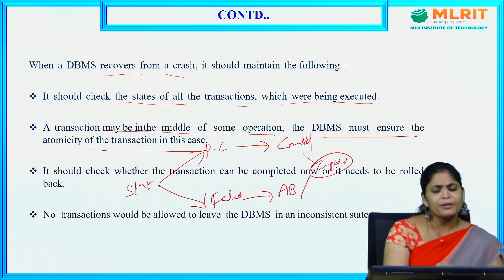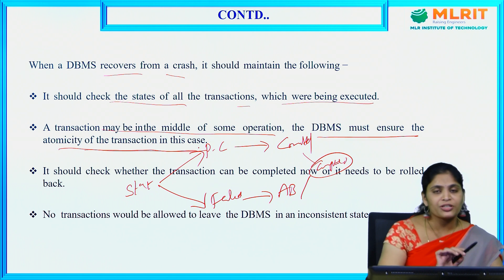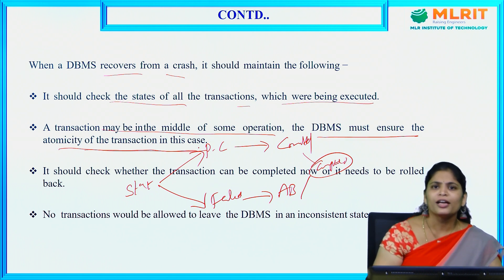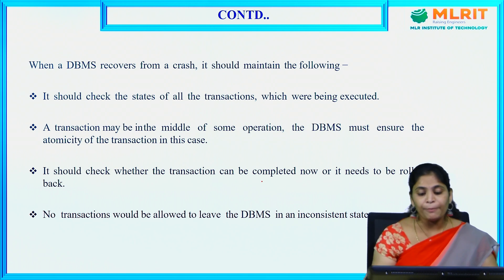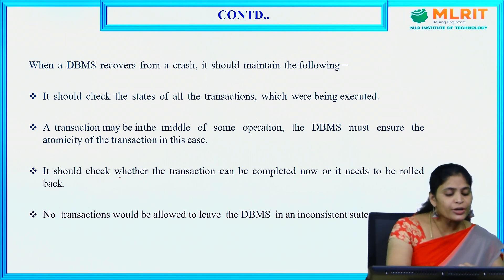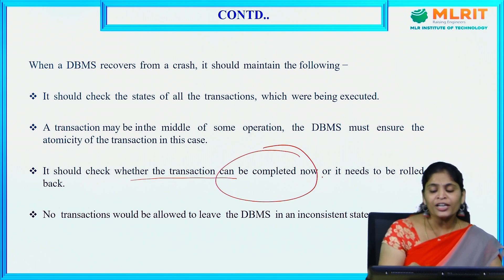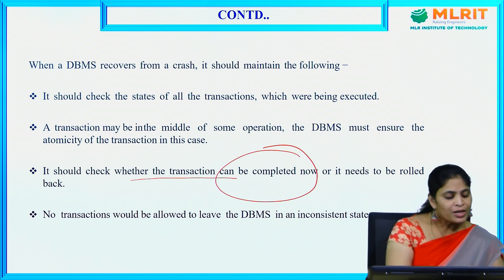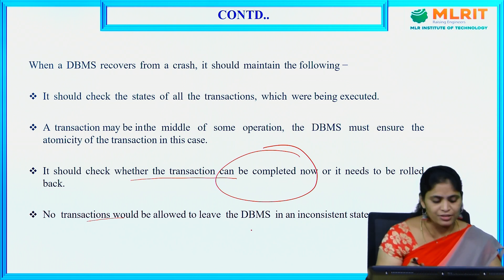A transaction may be in the middle of some operation. The DBMS must ensure atomicity — do full or nothing. It should check whether the transaction can be completed now or it needs to be rolled back. No transaction would be allowed to leave the DBMS in an inconsistent state.